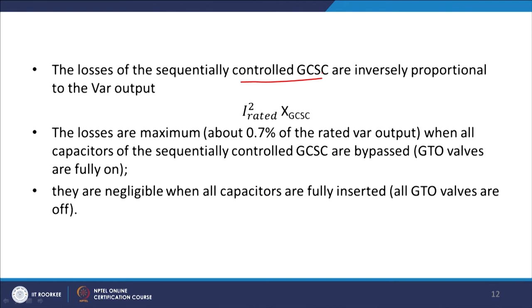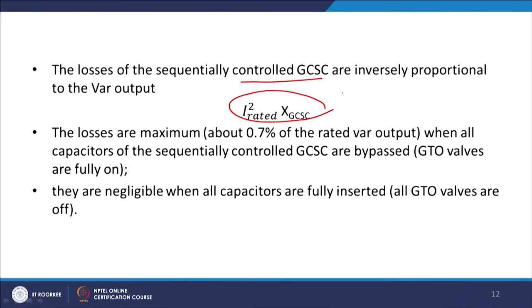The losses of the sequentially controlled GCSC are inversely proportional to the VAR output, since it is a current-dependent device. The loss is I² × X_GCSC. The loss is maximum — about 70 percent of rated VAR voltage — when all capacitors of the sequentially controlled GCSCs are bypassed and the GTOs are fully on. Losses are negligible when all capacitors are fully inserted and all GTOs are off.